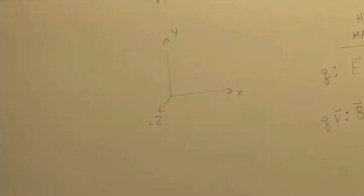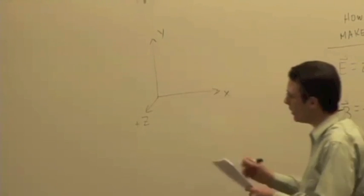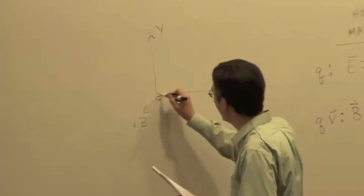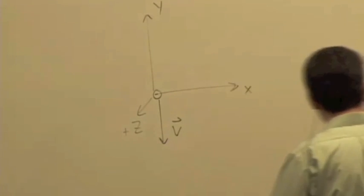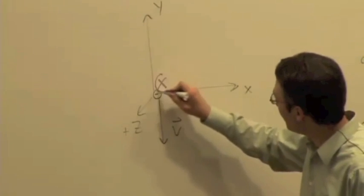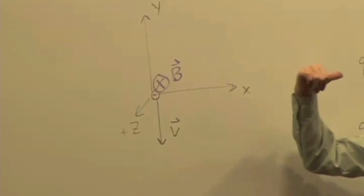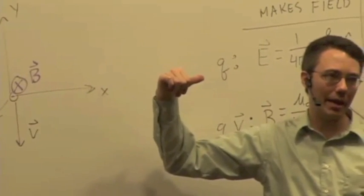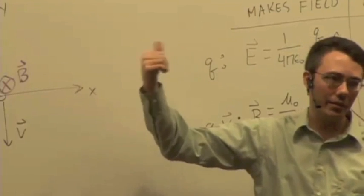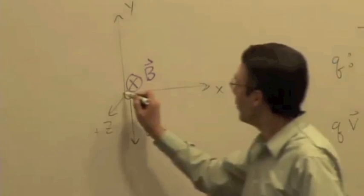So if I have an electron moving in the negative Y direction — here's the electron and its velocity is that way — and the magnetic field at that location is negative Z, so B is pointing into the board. We say V cross B gives me positive X, but I multiply by the charge of an electron, so the force is in the opposite direction, the negative X direction.